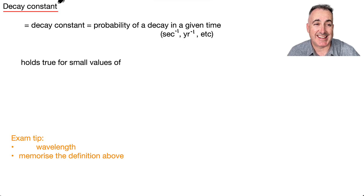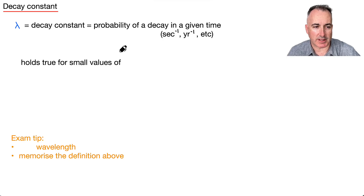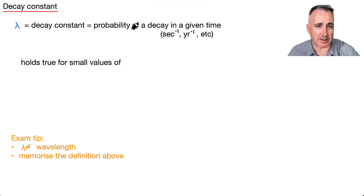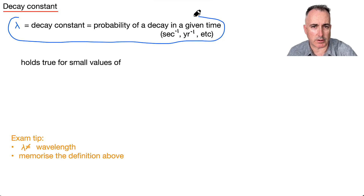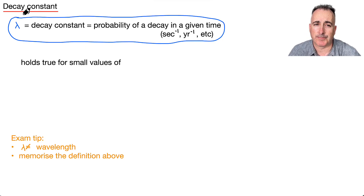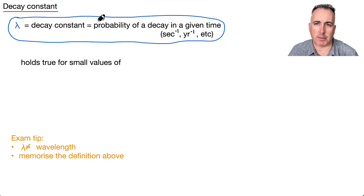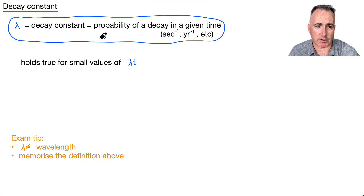We've got something called the decay constant, given by the Greek symbol lambda. That's annoying because you might think lambda is the wavelength — but the decay constant lambda is not equal to the wavelength. That's your exam tip, watch out for that. The definition you need to know: the decay constant is the probability of getting a decay in a given time — for example, the probability of a decay per second, or per year. This holds true for small values of λt, and you need to memorize this definition as it shows up often on exams.